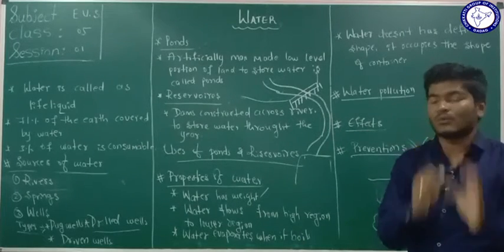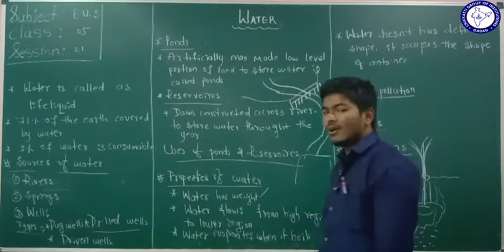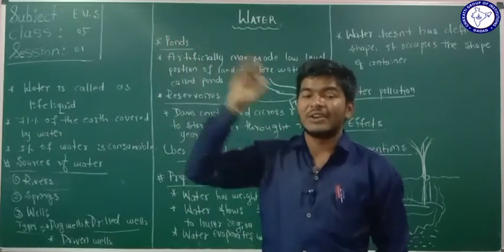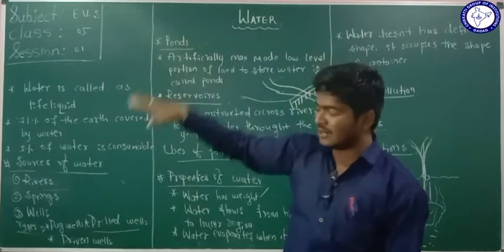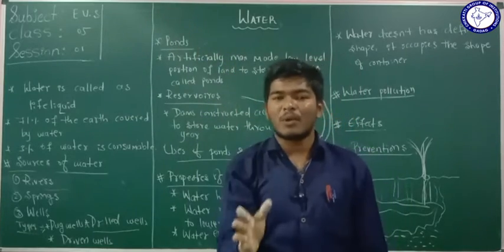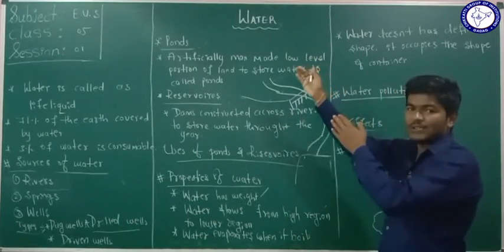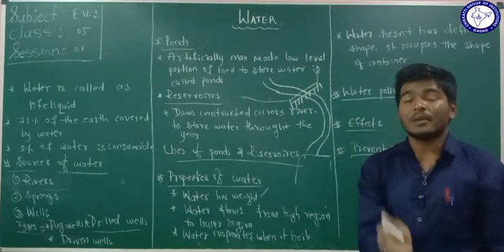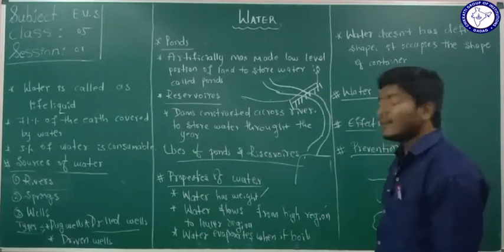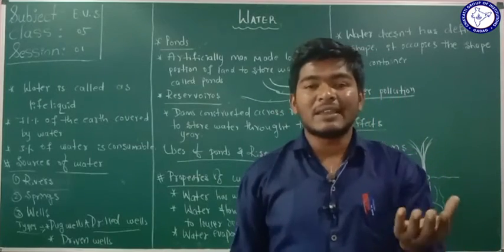The second property: water flows from high regions to lower regions. Pour water on a staircase and observe — water always flows downward, not upward. Water always flows from a higher region to a lower region. This is another property of water.